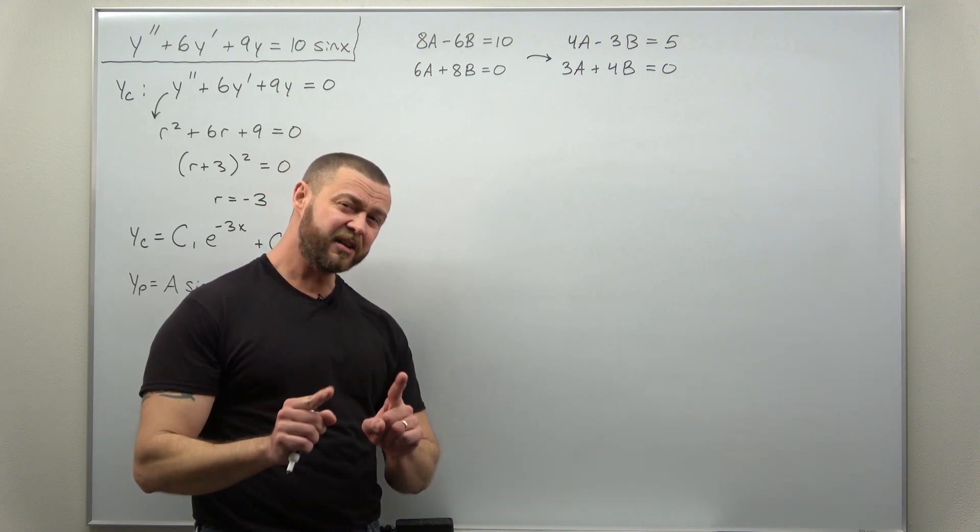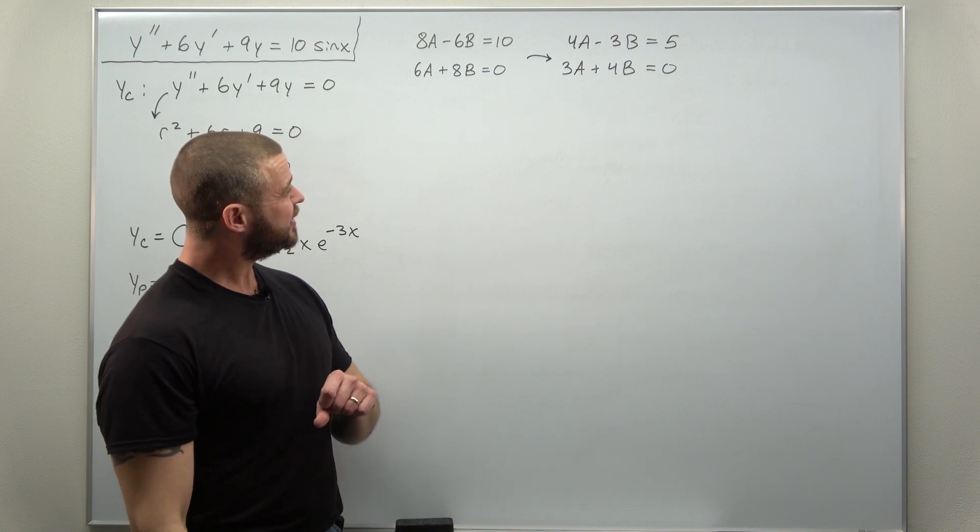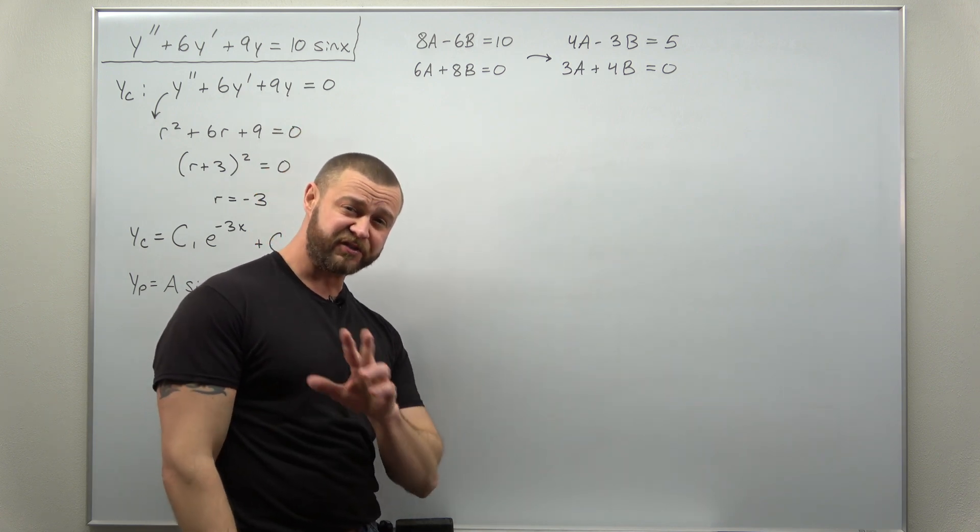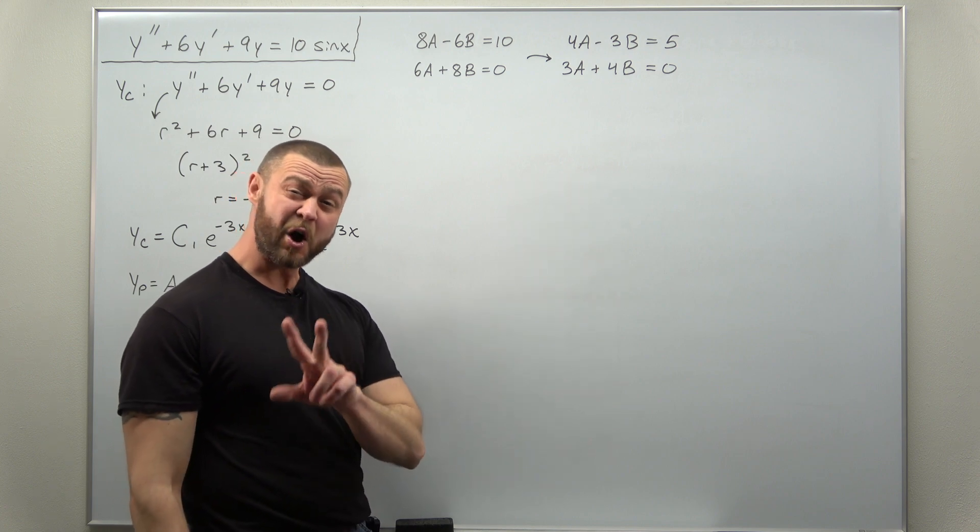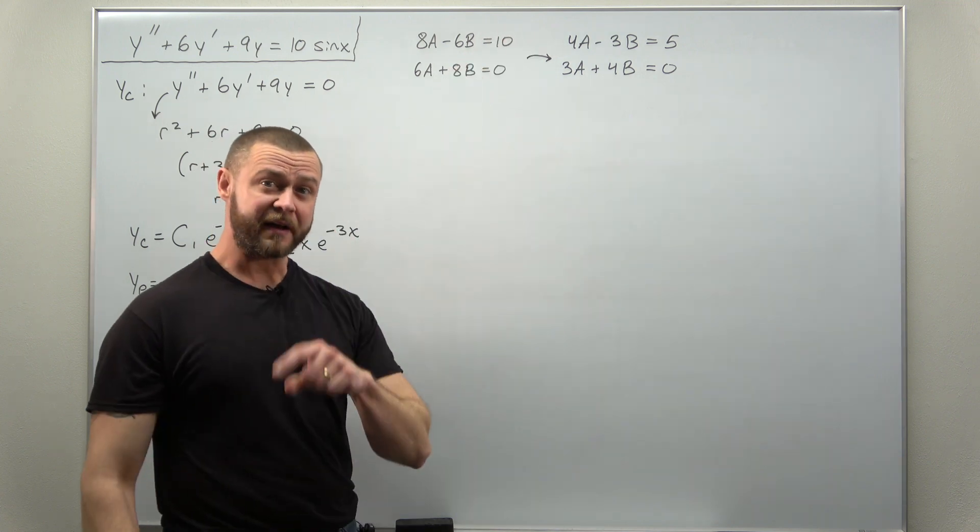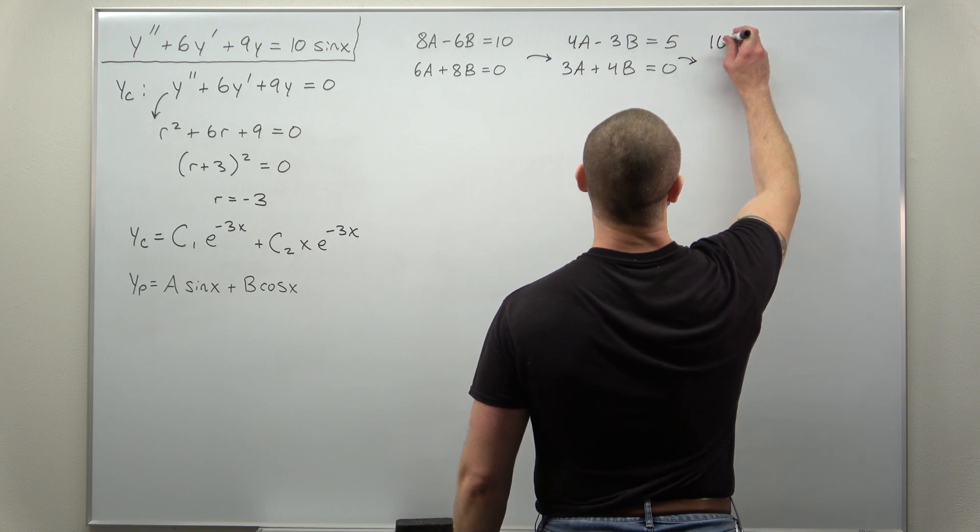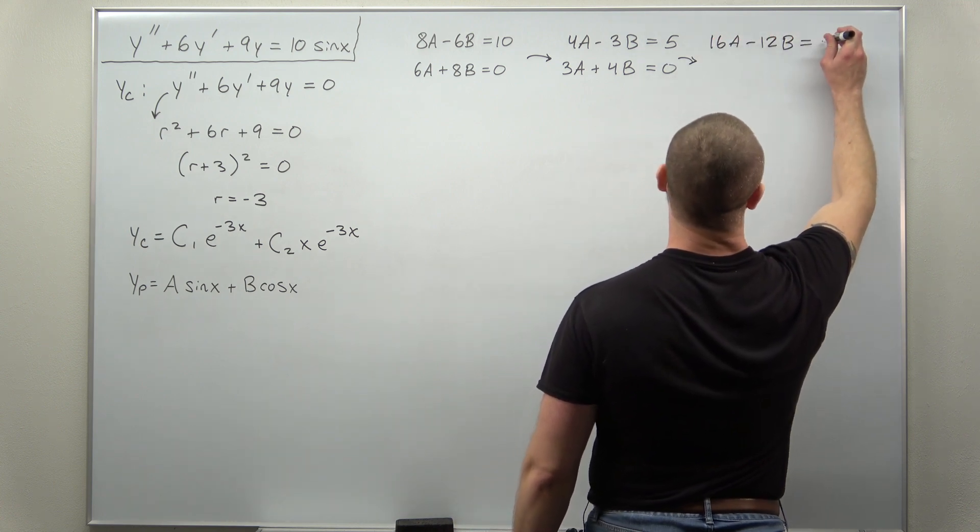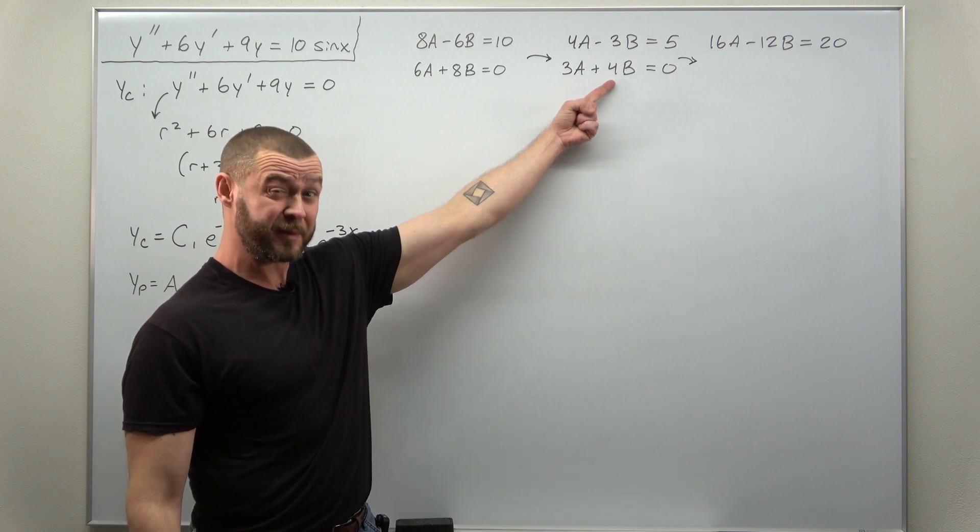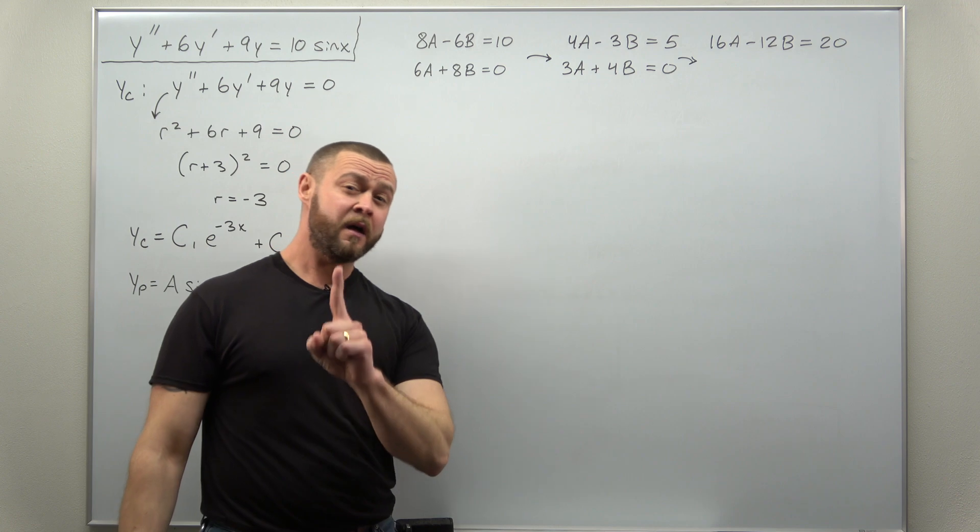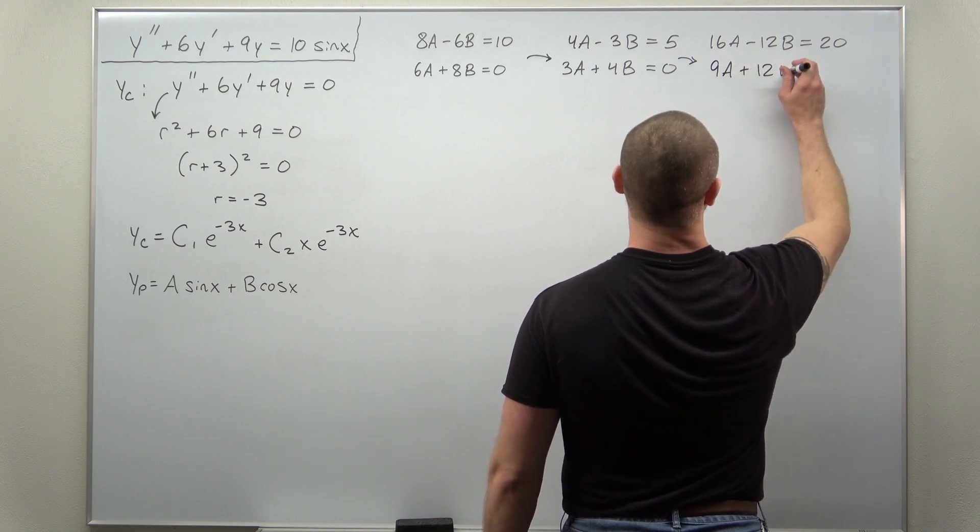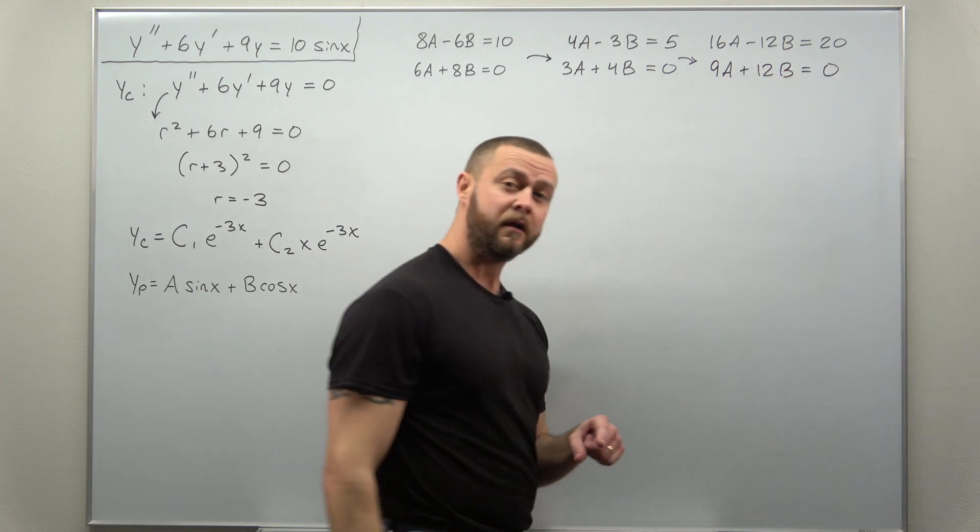Personally, I hate dealing with fractions. And what I would like to get to cancel are my b terms, since one's positive and one's negative. But we don't have the right coefficients to get them to cancel. So if we make the coefficients of b, 12, we can get them to cancel. Let's multiply the first equation by 4. We'll get 16a minus 12b equals 20. And to get a coefficient of 12 on the b term in the second equation, I'm going to multiply the second equation by 3. So we get 9a plus 12b equals 0.